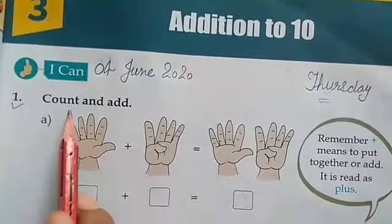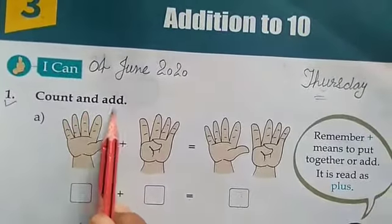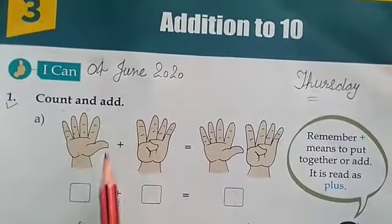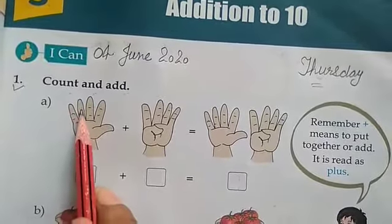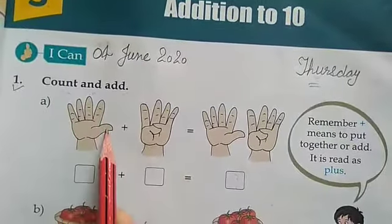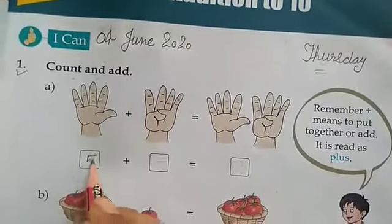Read this heading: count and add. Now count how many fingers. 1, 2, 3, 4, 5. In the box here write 5.